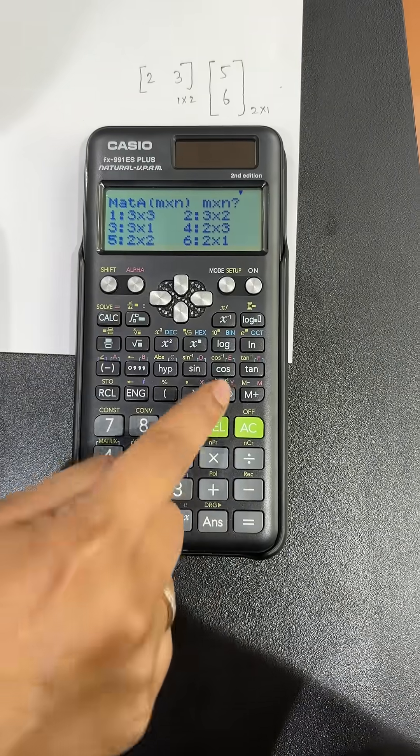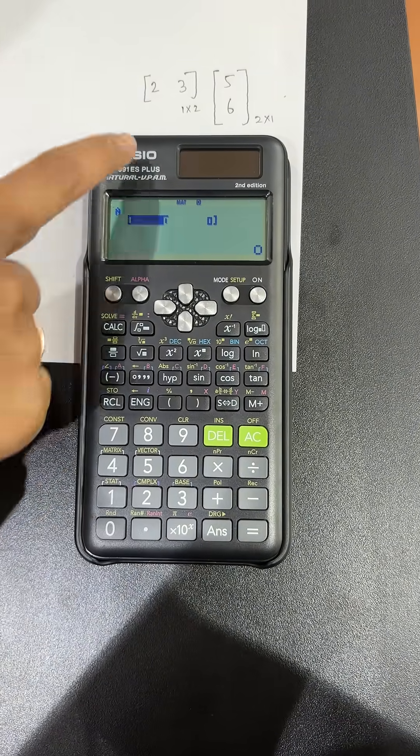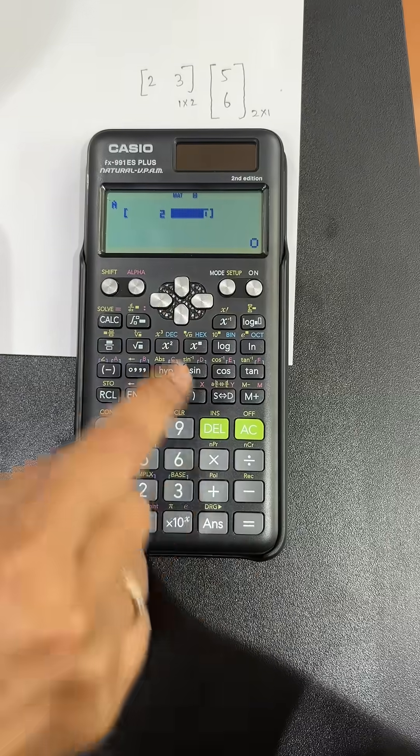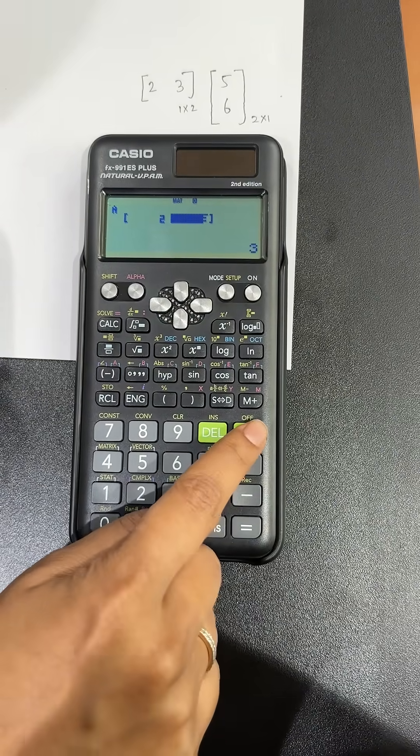We will move down to select 2. Let us put the values 2, 3. Once this is done, you can click on equals.